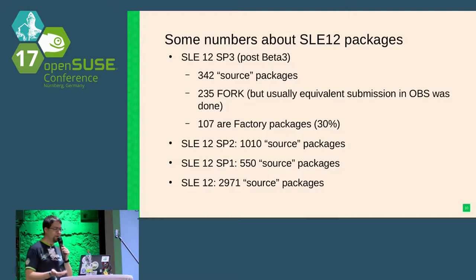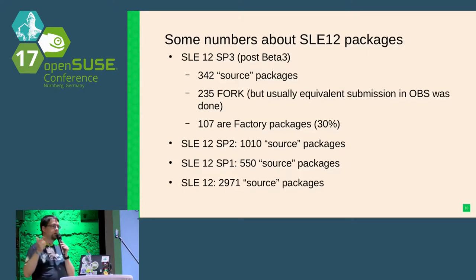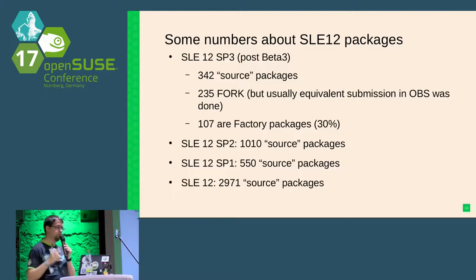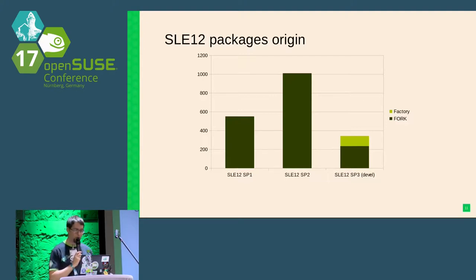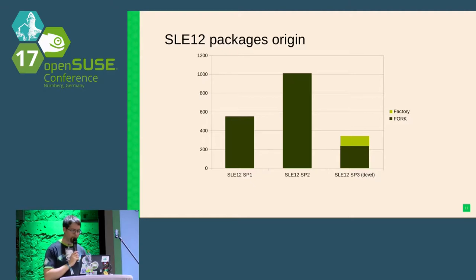The two-thirds remaining are what we call forked — but it doesn't mean we are completely diverging. Usually we've asked developers to make sure they push the same change to factory, but sometimes we can't upgrade if the factory version is more recent than what we want in SP3. Then we just make sure the same change is done on both SP3 and factory. But one third coming directly from factory — that's progress. Putting this into a graph: SP1 had about 500 packages, SP2 about 1,000, SP3 at the moment around 300. We are progressing.